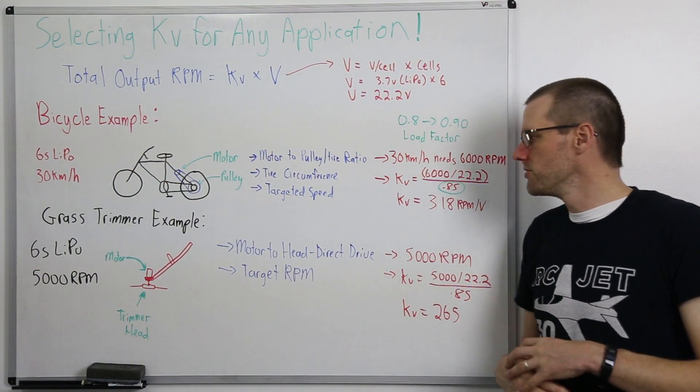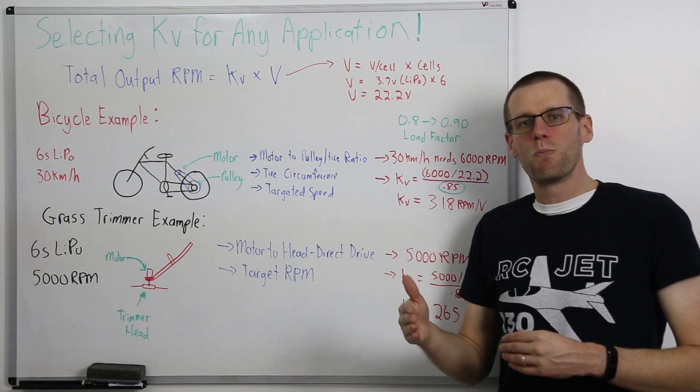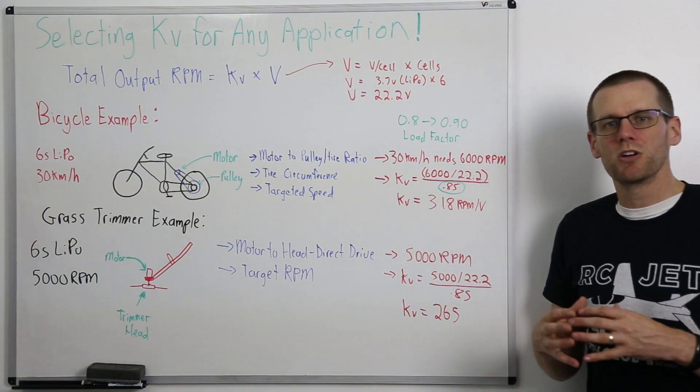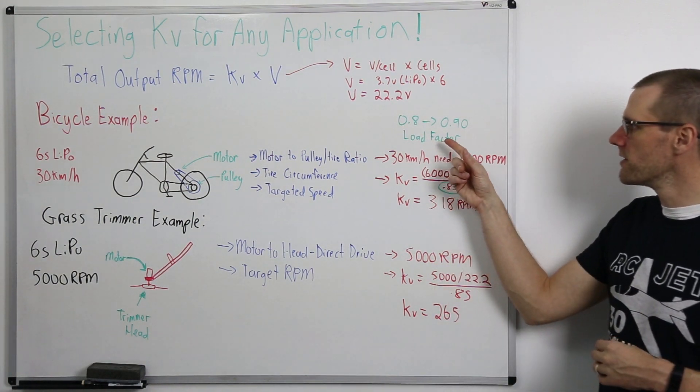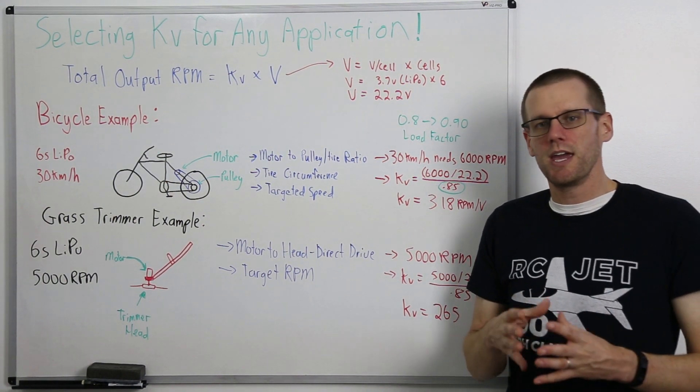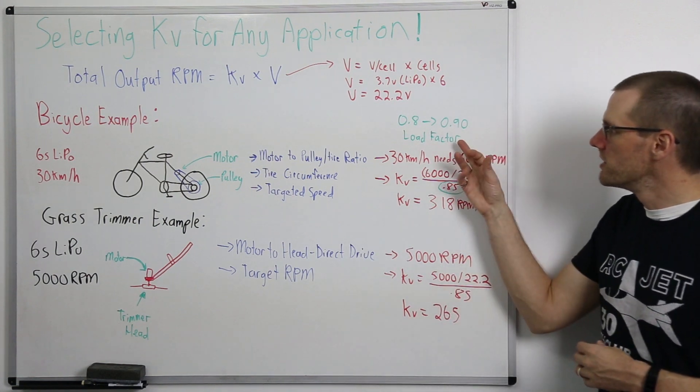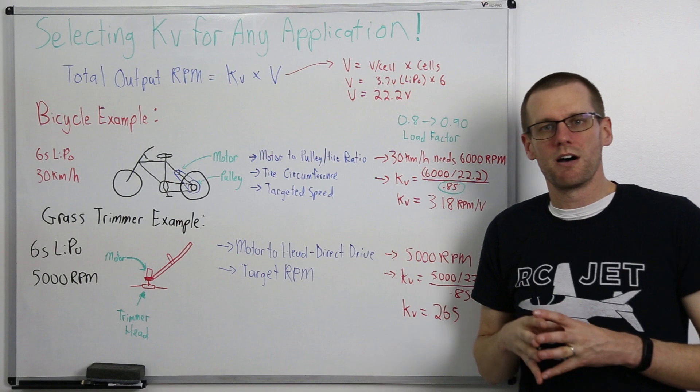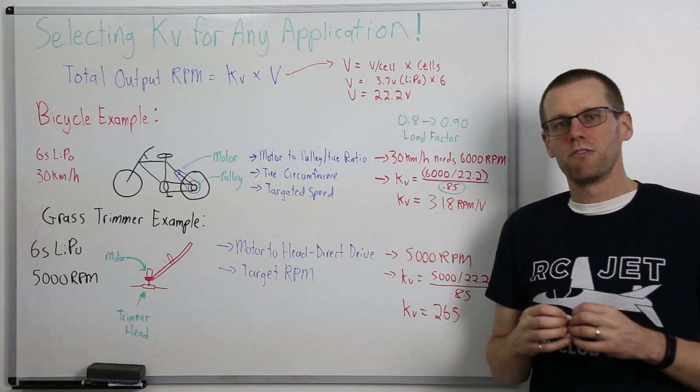Then we just plug it right into our formula here where our kV is equal to that output rpm divided by the voltage of our battery pack and then we're going to divide that by a load factor. So I have load factor up here in green. I have seen that this comes anywhere from between 0.8 to about 0.9 as a percentage.